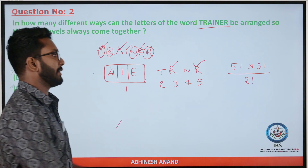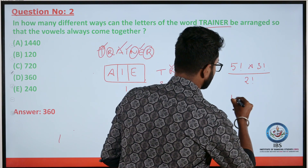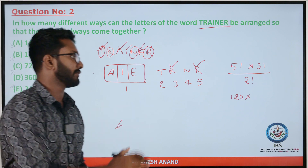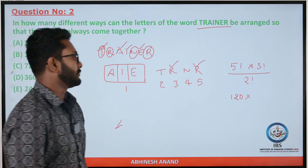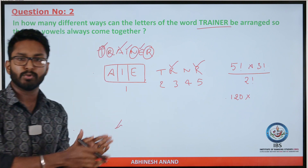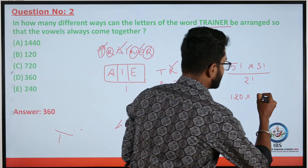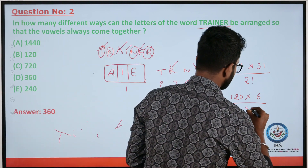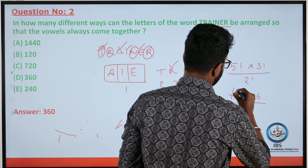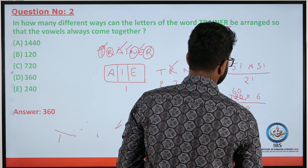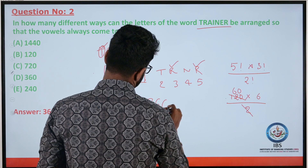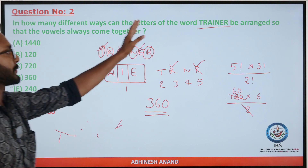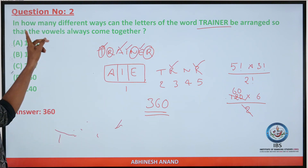5 factorial is 1 × 2 × 3 × 4 × 5 = 120. 3 factorial is 1 × 2 × 3 = 6. 2 factorial is 1 × 2 = 2. So the answer is 120 × 6 ÷ 2 = 360. The letters of TRAINER can be arranged in 360 different ways with the vowels together.